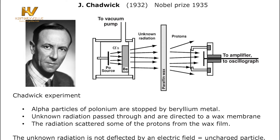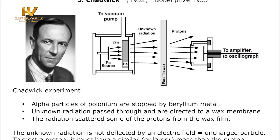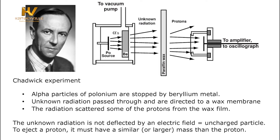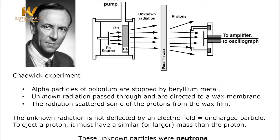In 1932, James Chadwick, a student of Rutherford, discovered a subparticle of an atom called the neutron through the bombardment of a thin sheet of beryllium with alpha particles. The neutron carried no charge, and its discovery indicated that the atomic nucleus was made up of protons and neutrons. It also explained the existence of isotopes of an element.